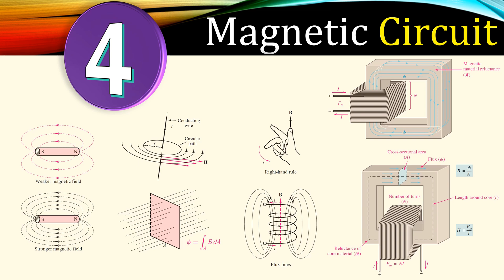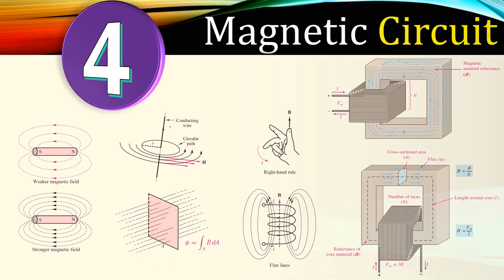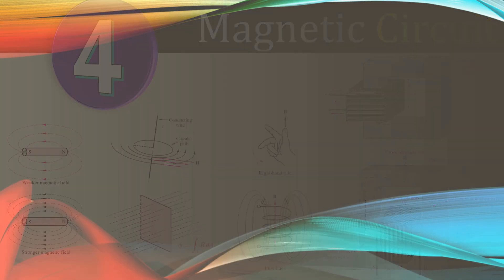Hi everyone and welcome to a new video about a magnetic circuit example. This is our example number four. In this example we will discuss a practical situation, so let's look at a problem.